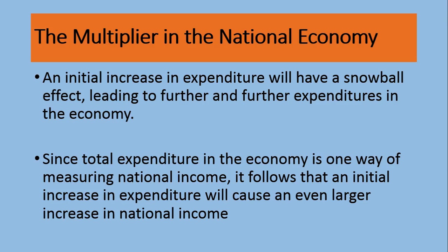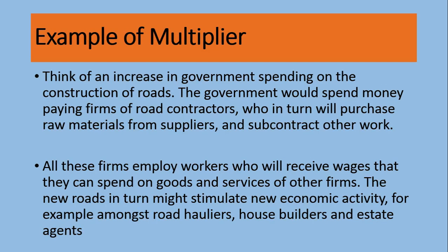An initial increase in expenditure multiplies through the economy multiple times — two, three, four, five times — leading to further and further expenditure. The total expenditure in the economy, as one way of measuring national income, means that an initial increase in expenditure will cause an even larger increase in national income. Now let me show you how it works.